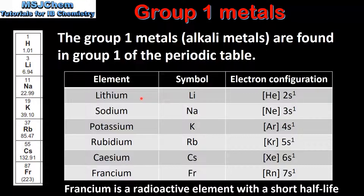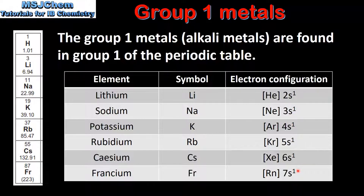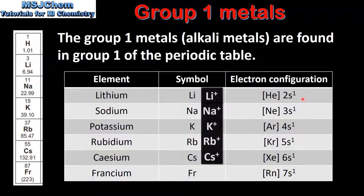As we go down the group we have lithium, sodium, potassium, rubidium, cesium, and francium. If we look at the electron configurations, we can see they all have one electron in the S sub level. This tells us that they have one valence electron in the outer main energy level. When group 1 metals react, they lose this one valence electron to form 1+ ions.